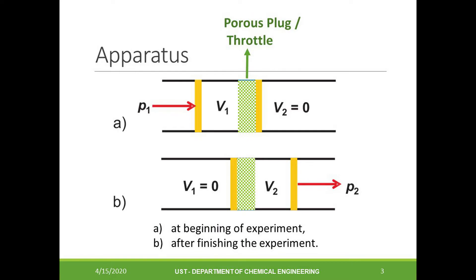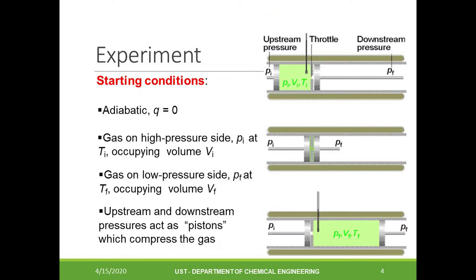We can actually remake the experiment using a better apparatus as shown in this slide. Imagine a tube with a porous plate separating it into two parts. The porous plate will allow gas to pass through, but only slowly, so it acts as a throttle. On each side of the plate, there is a piston that fits the tube tightly, and each piston can be pushed against the porous plate.